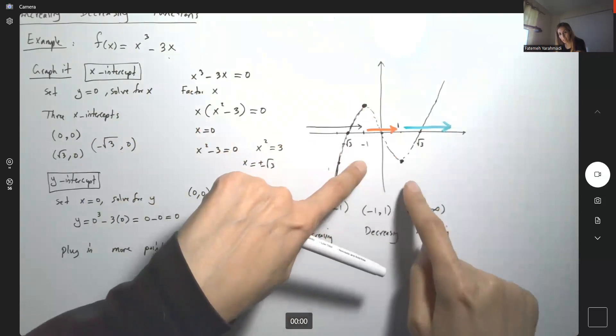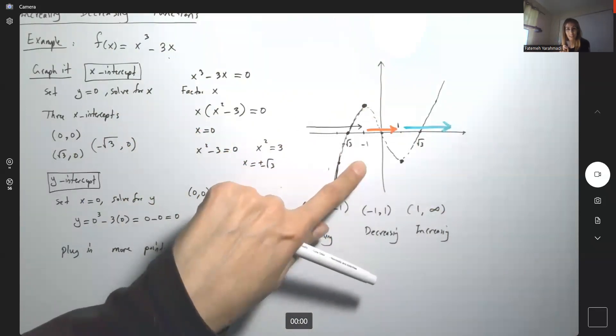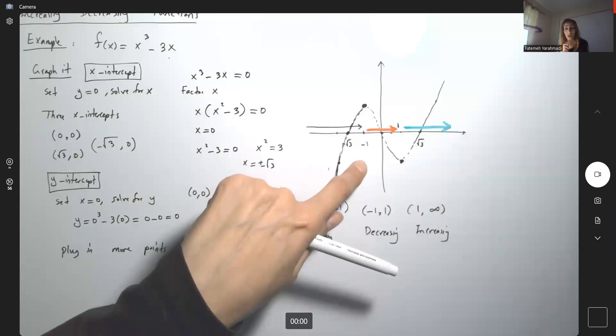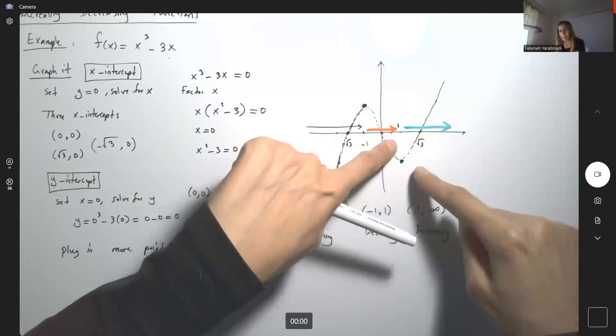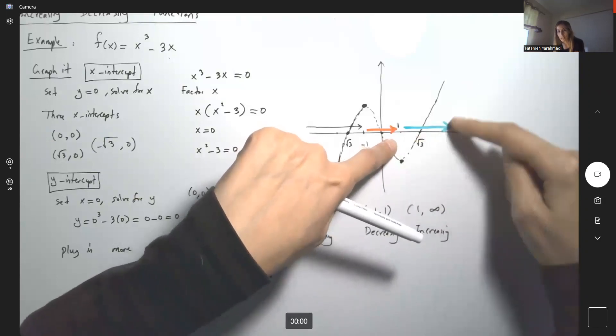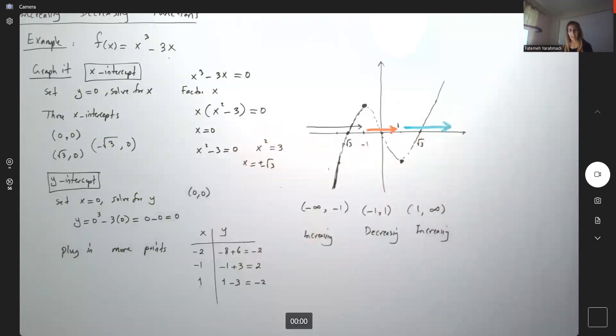the y values are getting smaller. The function is represented by y values, not x values. From 1 to positive infinity, the y values are getting larger and larger.